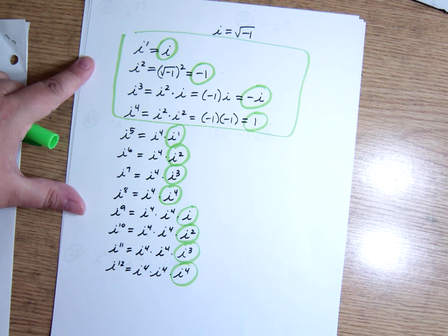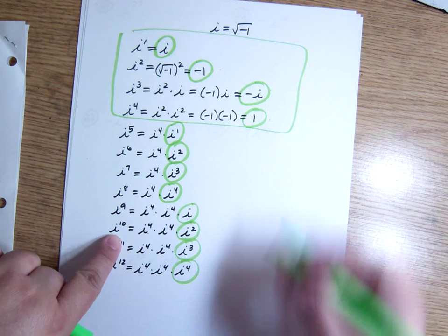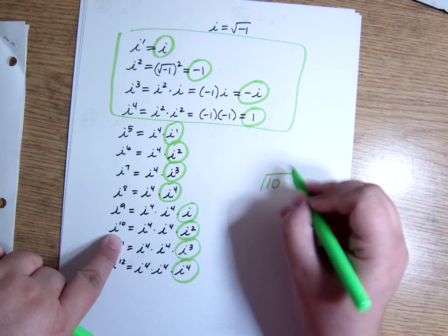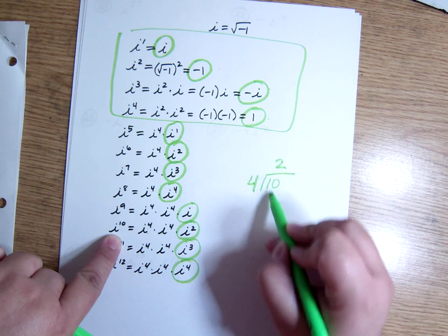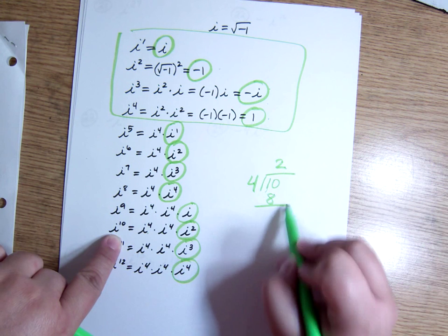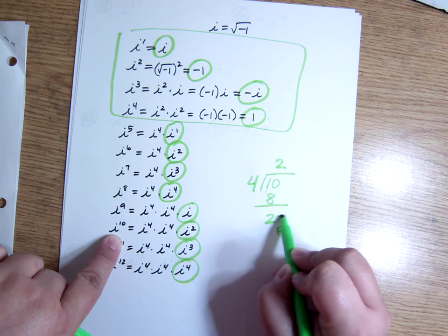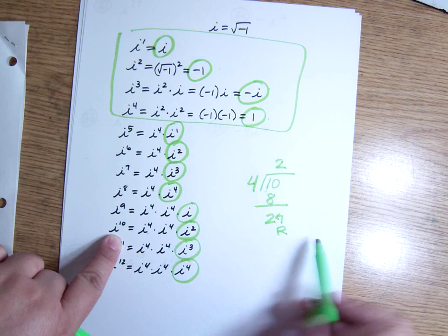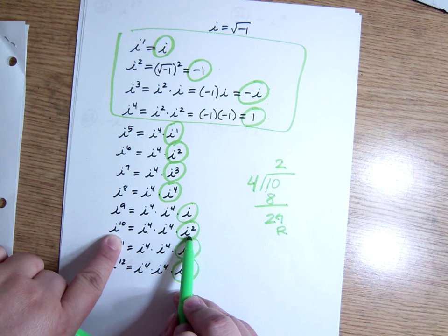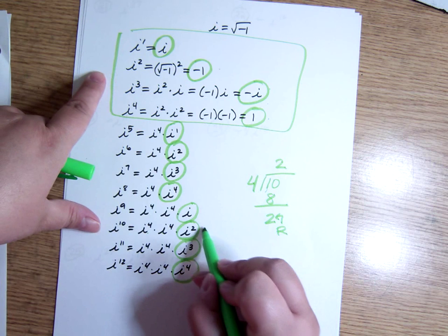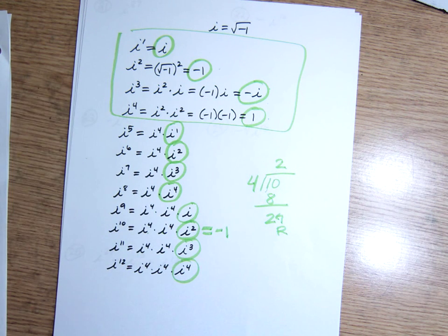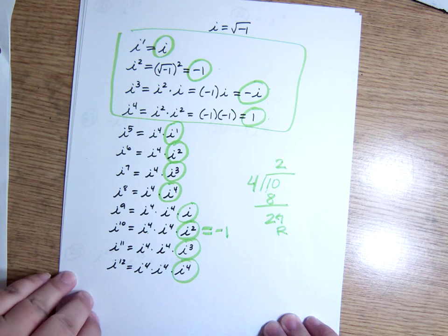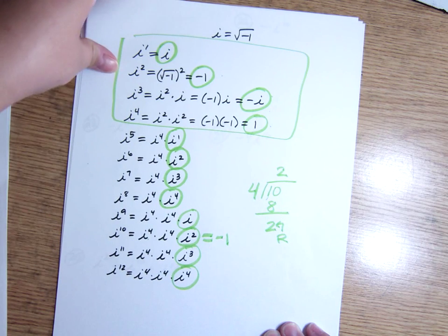For instance, if I divide 10 by 4, 10 divided by 4, hopefully you can see this, it goes 2 times, 2 times 4 is 8. My remainder is 2. So that's why it's going to be the same as i squared, which is negative 1. That happens for all of these. If you figure out what the remainder is when you divide by 4, then you have figured out which one of these your expression is the same as.